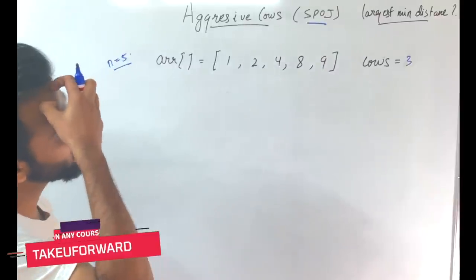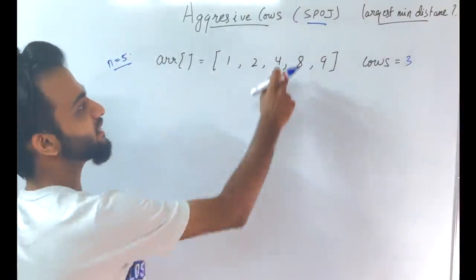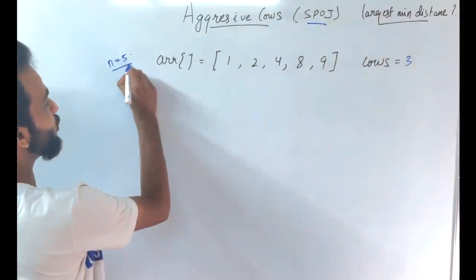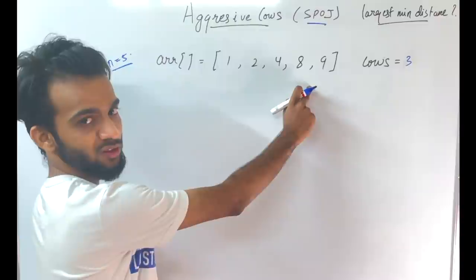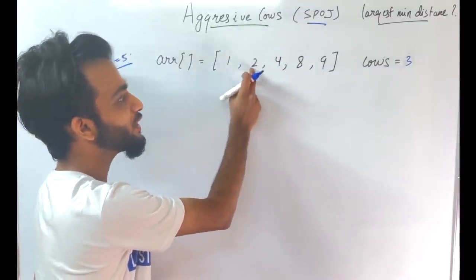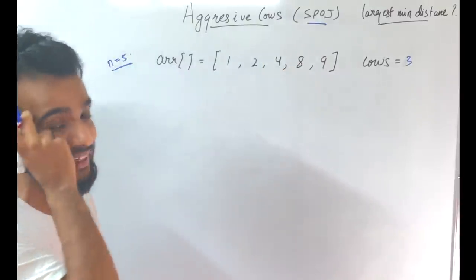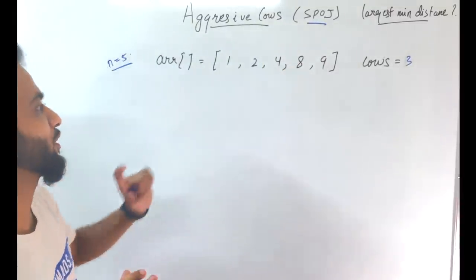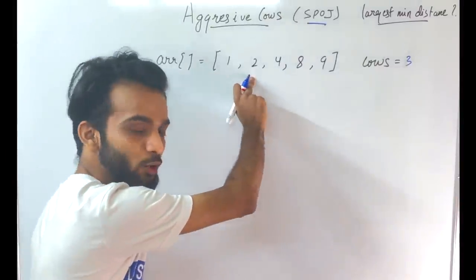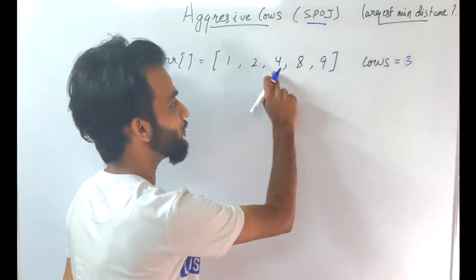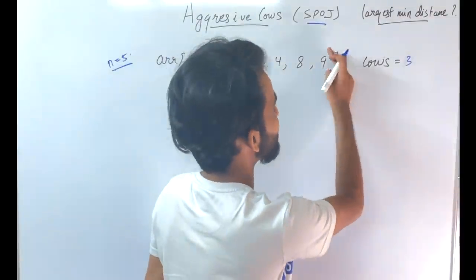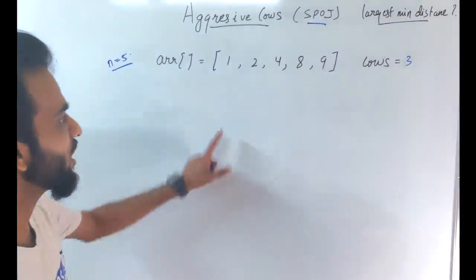This question is basically 'Aggressive Cows' and it is taken from SPOJ. The question states: you will be given five stalls and an array that contains the location of every stall. The locations might not be given in sorted order — for example, stalls at coordinates 1, 2, 4, 8, and 9.